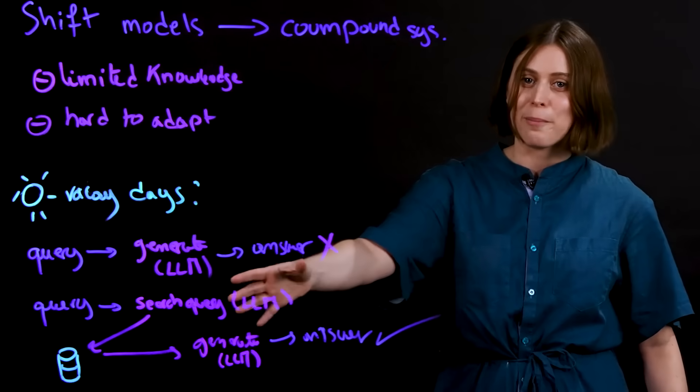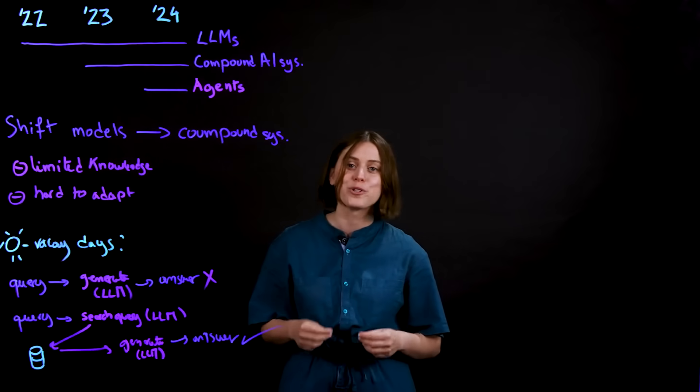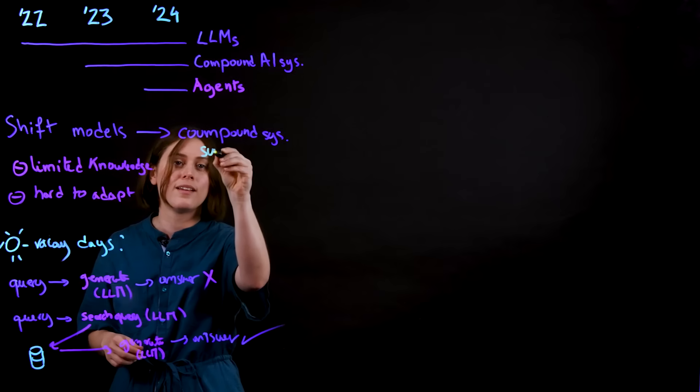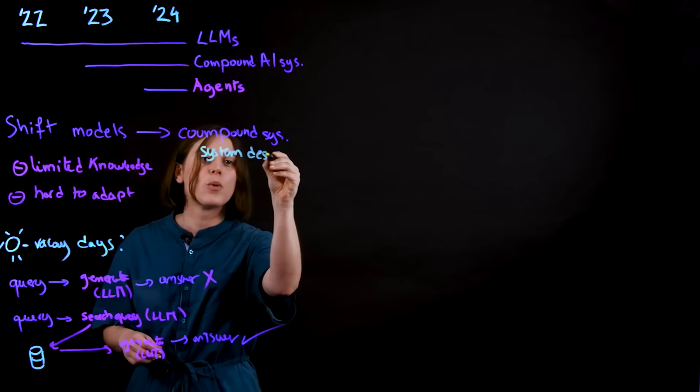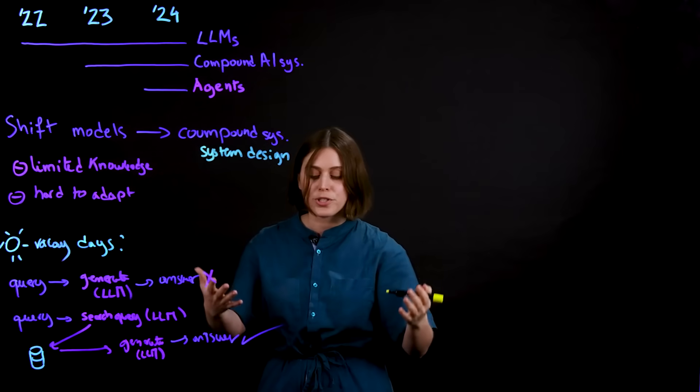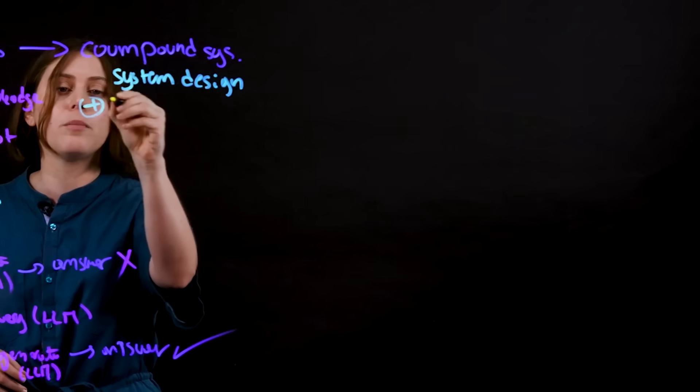This is an example of a compound AI system, and it recognizes that certain problems are better solved when you apply the principles of system design. So what does that mean? By the term system, you can understand there's multiple components. So systems are inherently modular.